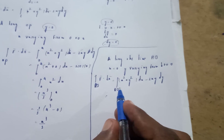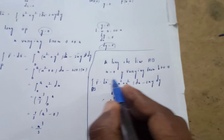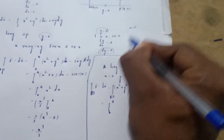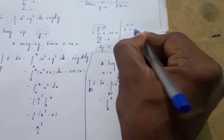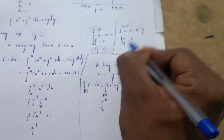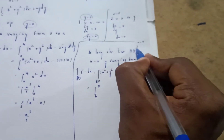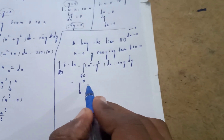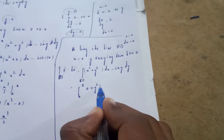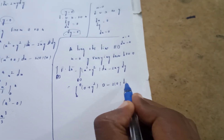Along RO: limit is b to 0, x=0, dx=0. Differentiation with respect to y gives dx/dy=0, so dx=0. With x=0, both F1·dx and -2xy·dy terms become zero. So the integral along RO equals 0.